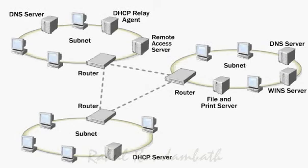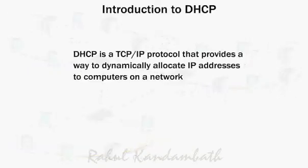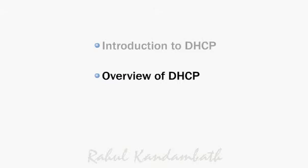In Transmission Control Protocol / Internet Protocol, or TCP/IP networks, many components are used to ensure that each TCP/IP host can communicate with other TCP/IP hosts and access network resources. DHCP is a TCP/IP protocol that provides a way to dynamically allocate IP addresses to computers on a network. Now let's look at an overview of DHCP.